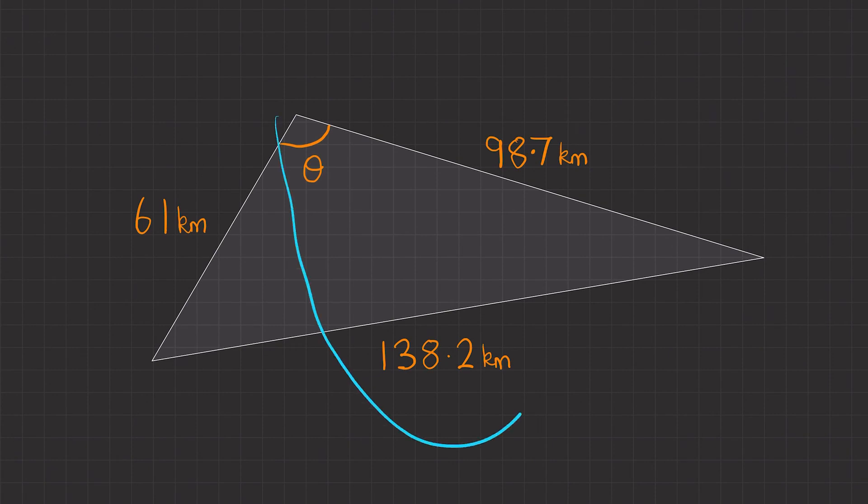Straight away with this one, I can see there's one pair, but then there's no other angles. So we can't get a second pair. So therefore, we need to use the cosine rule.